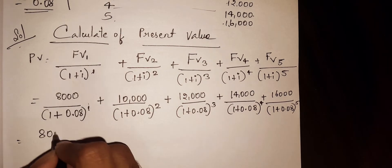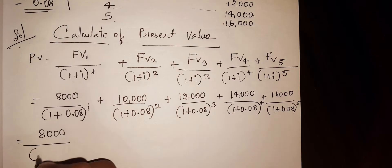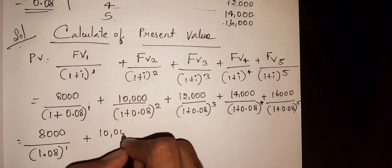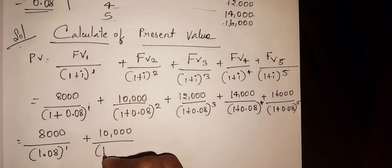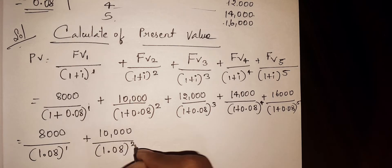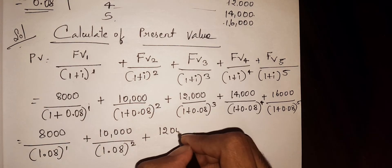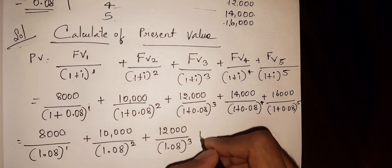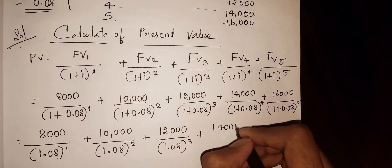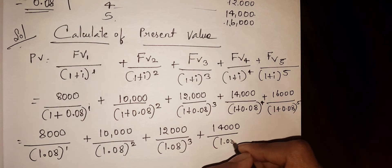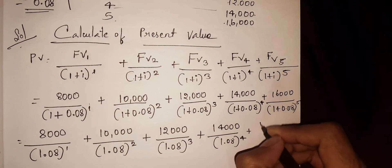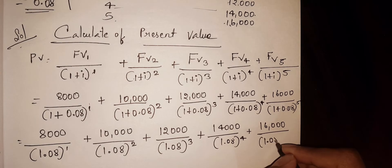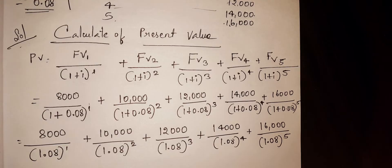Now let us write it in a simplified version: 8,000 divided by 1.08^1, plus 10,000 divided by 1.08^2, plus 12,000 divided by 1.08^3, plus 14,000 divided by 1.08^4, plus 16,000 divided by 1.08^5.